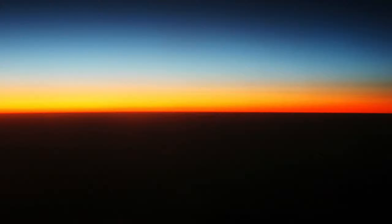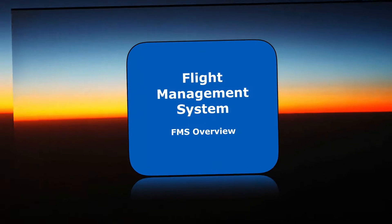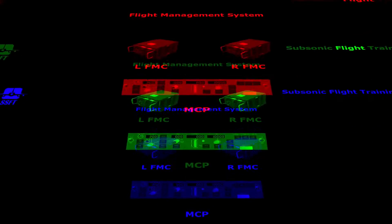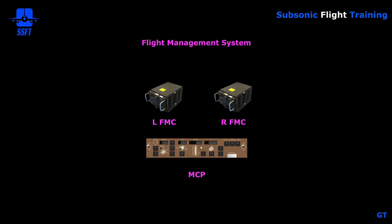Our briefing today will cover the flight management system — an overview of the FMS or flight management system. The flight management system allows us to fly the airplane in an efficient manner both laterally and vertically using the autothrottle system and the autopilot flight director system through the mode control panel.